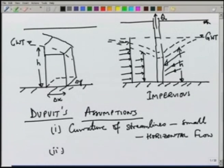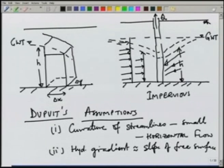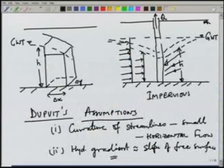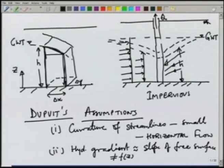The second assumption is that the hydraulic gradient can be taken as the slope of the free surface, and the hydraulic gradient will remain constant over height — it will not be a function of z, where z is the vertical coordinate. So if we take an element, the hydraulic gradient for the whole depth is given by the slope of the water table and does not change with depth. Using these two assumptions, we can now write the mass balance for this element.